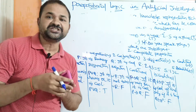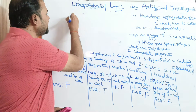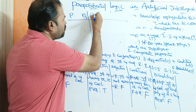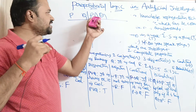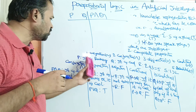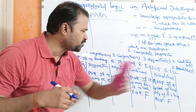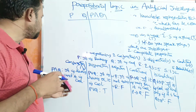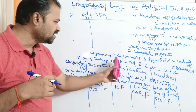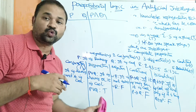The first connective is conjunction, which is represented by the AND symbol (∧). If we have two propositions P and Q, then the conjunction is denoted P ∧ Q. For example, let P = 'It is raining' and Q = 'It is cool.' Then P ∧ Q can be written as 'It is raining and it is cool.'